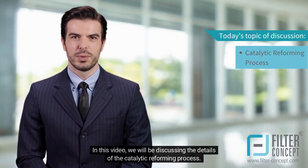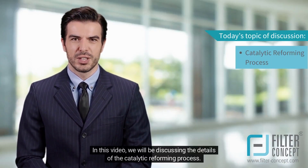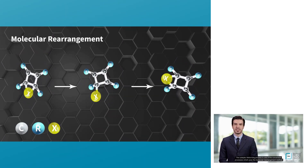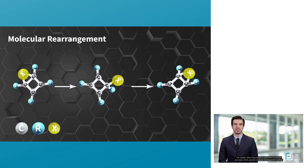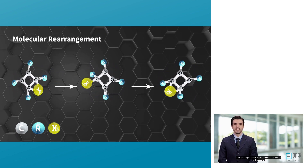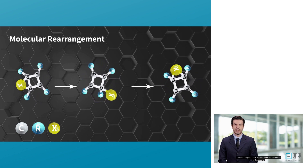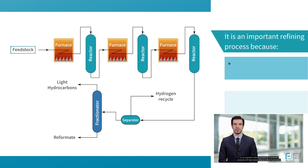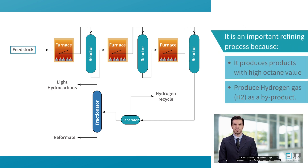In this video, we will be discussing the details of the catalytic reforming process. The catalytic reforming process is one of the conversion processes which uses the molecular rearrangement method for converting long-chain hydrocarbons into short-chain hydrocarbons. The key application is to increase the octane number of the feed and convert light crude fractions having high paraffin and naphthene contents into aromatics. It is an important refining process as it produces products with high-octane value as well as hydrogen gas as a by-product.